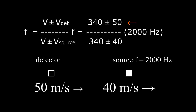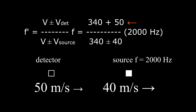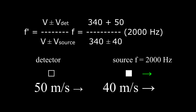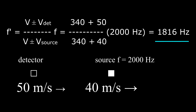First, look at the numerator, which contains the velocity of the detector. The detector is trying to move toward the source and this will increase f prime. We make the ratio larger by choosing the plus sign in the numerator. Next, look at the denominator, which contains the velocity of the source. The source is trying to move away from the detector and this will decrease f prime. So we choose the plus sign in the denominator to make the ratio smaller. The Doppler shifted frequency f prime is 1816 hertz.